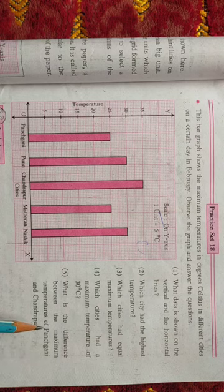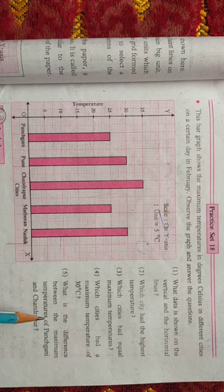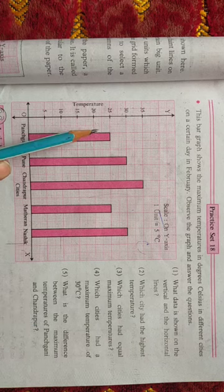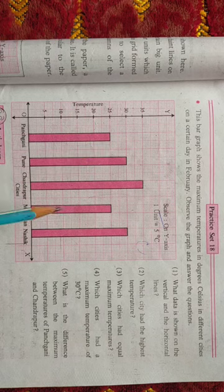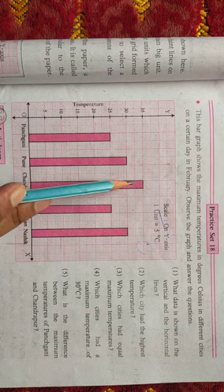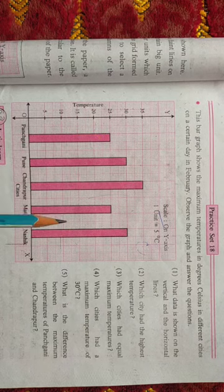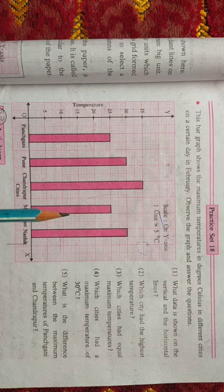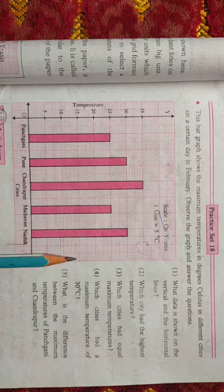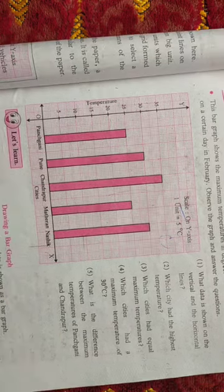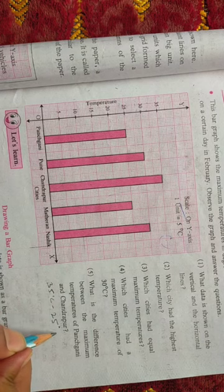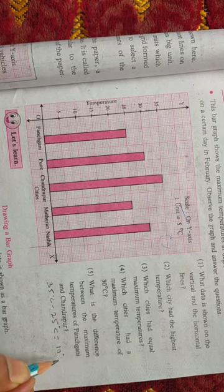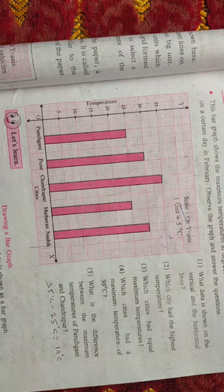Next question: what is the difference between the maximum temperature of Panjgani and Chandrapur? The maximum temperature of Panjgani was 25 degrees and the maximum temperature of Chandrapur was 35 degrees Celsius. So 35 degrees Celsius minus 25 degrees Celsius equals 10 degrees Celsius. This is how you write the answer.